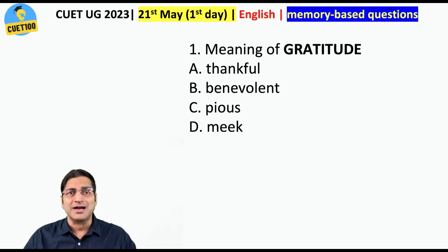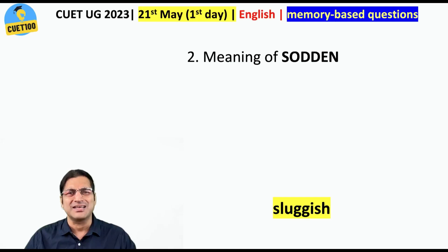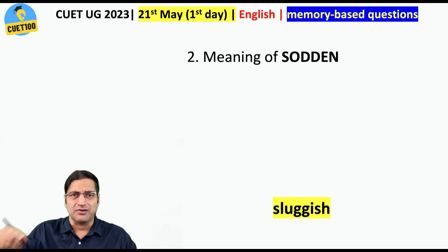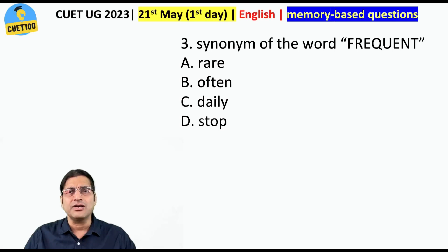Meaning of 'gratitude' — are you grateful, thankful? Of course, gratitude means thankfulness. Meaning of 'sodden' — it means sluggish. It is used in two ways: if someone is very wet, soaked with water, that is also sodden. But figuratively, if your enthusiasm is sodden, you would be sluggish. Synonym of the word 'frequent' — isn't it very simple? Often.